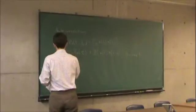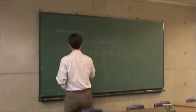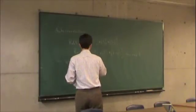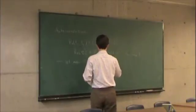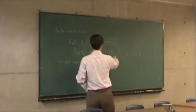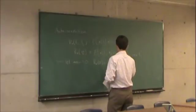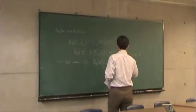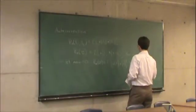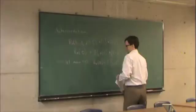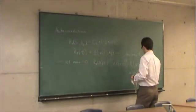If we let the mean equal to 0, then Rx of 0 is equal to the expected value of, okay, substituting 0 in for tau, it's the expected value of xt, xt. And because the mean is 0, this is actually equal to the variance of the random process.